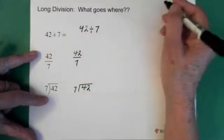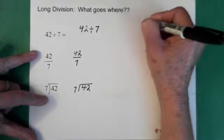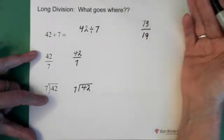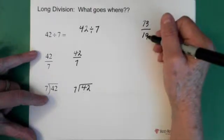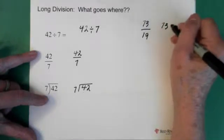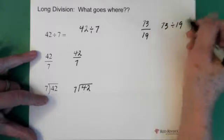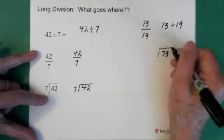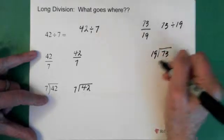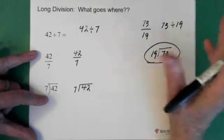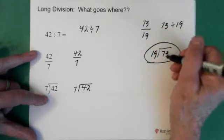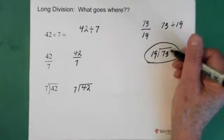Let's say we had seventy-three divided by nineteen. How do we set that up? Seventy-three divided by nineteen looks like this. It just helps to find a way to remember which one, which thing goes into this little house.